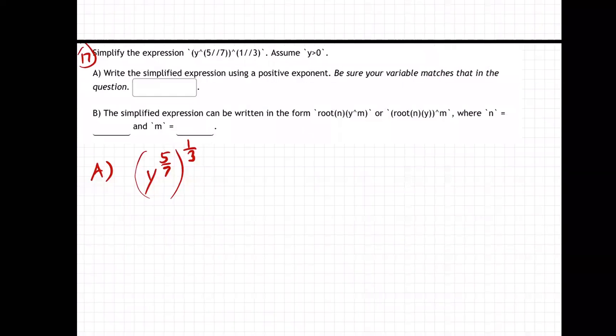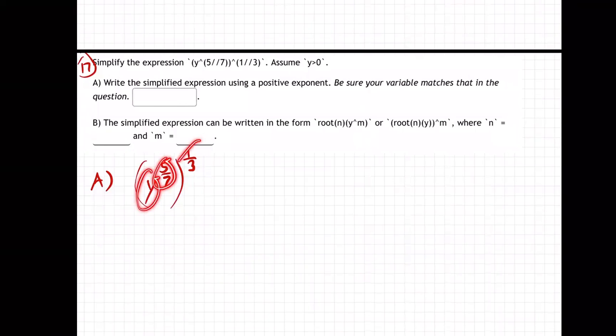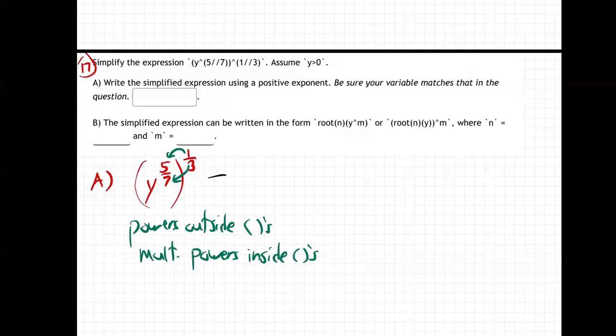So on this one, we have a letter to a power and then another power. The rule is powers outside parentheses multiply powers inside parentheses. So this one will multiply five, this three will multiply seven. What we'll get is y to the five times one is five over three times seven, twenty-one.